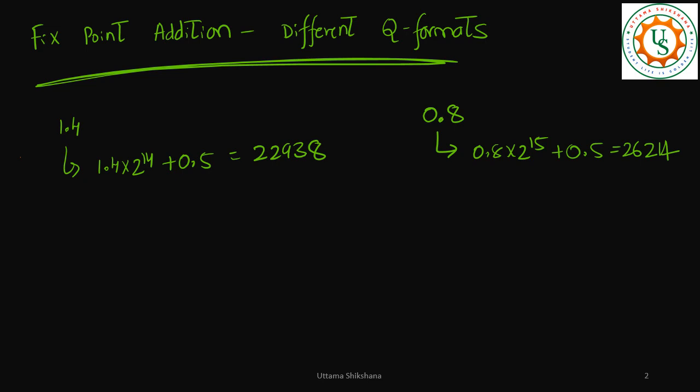Hey guys, welcome back. In this video I want to talk about fixed point addition considering different Q formats. As I was telling in the previous video, there can be a chance where you have to multiply two different queue formats. In that case, what should be the logic?